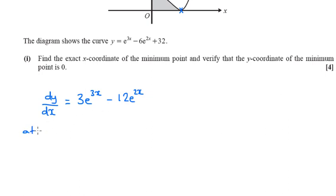So at the stationary point, dy by dx is equal to 0. So we can set this equal to 0.